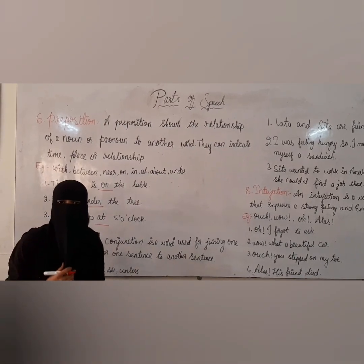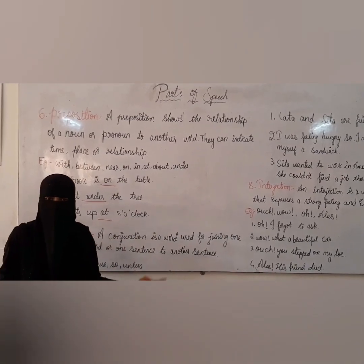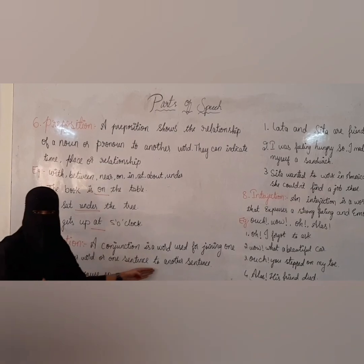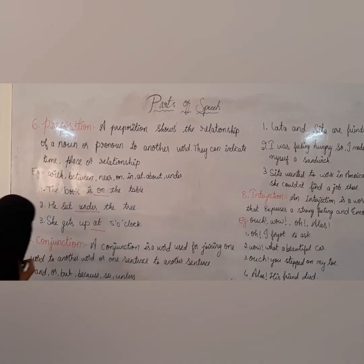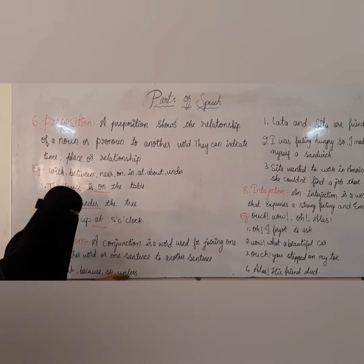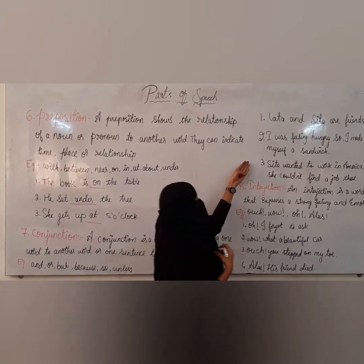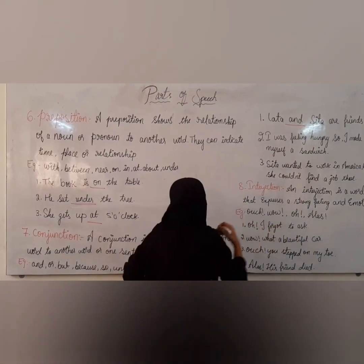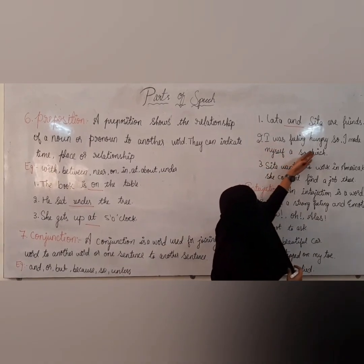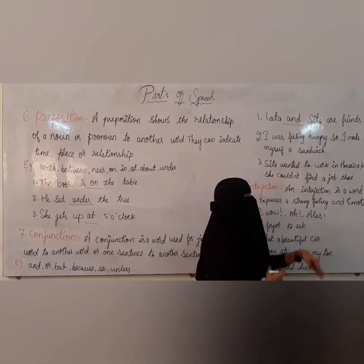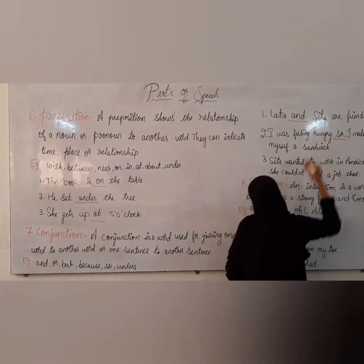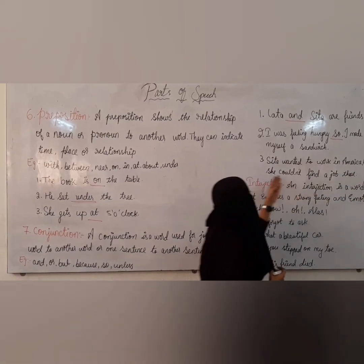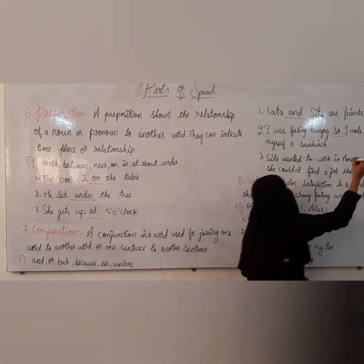Now let's move on to part of speech number seven — conjunction. What is a conjunction? A conjunction is a word used for joining one word to another word or one sentence to another sentence. Examples: and, or, but, because, so, unless, and so on. Lata and Sita are friends — and is a conjunction. I was feeling hungry, so I made myself a sandwich — so is a conjunction. Sita wanted to work in America, but she couldn't find a job there — but is a conjunction.